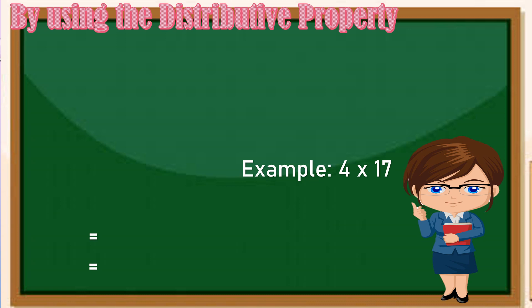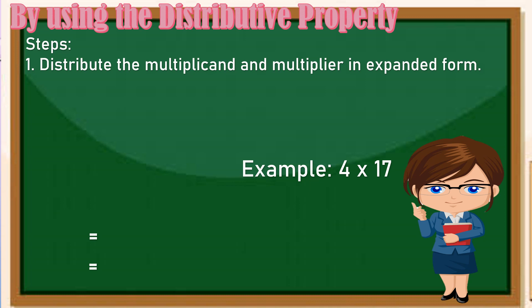Una, distribute the multiplicand and multiplier in expanded form. So we have 4 times 17. Ihiwalay muna natin yung multiplier na 17. So uunahin natin yung nasa tens place which is 1. So since nasa tens siya, magiging 10, kaya 4 times 10. Then lagay tayo ng plus sign dahil mamaya ipa-plus natin ito. Sunod natin ang nasa ones place which is 7, kaya 4 times 7.